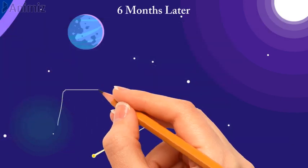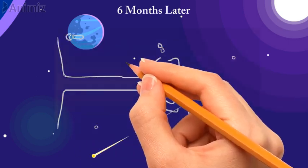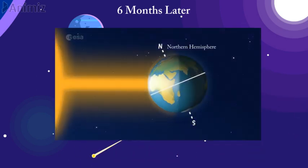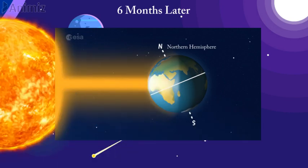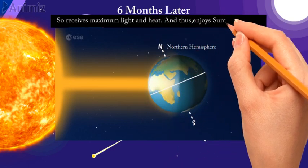Six months later, the position of the earth becomes opposite. And the northern hemisphere is leaning more towards the sunlight now. And so receives maximum light and heat. And thus enjoys summer season.